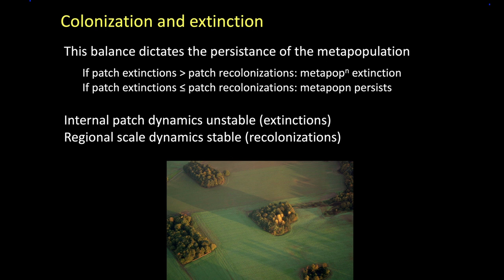What matters is the overall patch situation. We get persistence if the extinctions are less than or equal to the colonizations. If the extinctions exceed the colonizations, then the metapopulation is going to go extinct.